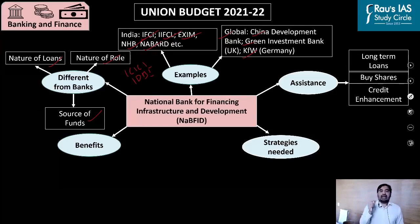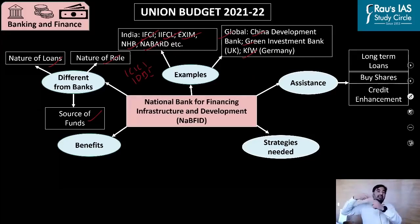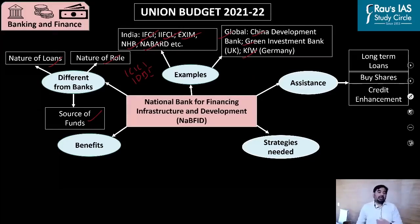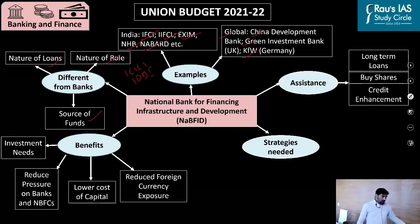When such a guarantee is provided on corporate bonds, the overall risk of investment reduces. As risk reduces, the credit rating increases. As the credit rating increases, the rate of interest on the corporate bond reduces. So the infrastructure companies are able to borrow funds from the market at a much lower cost — this is the role of credit enhancement by a development bank.